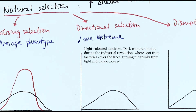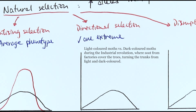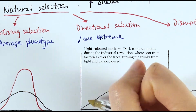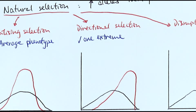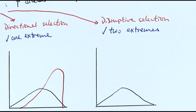Directional selection is when one particular extreme phenotype is selected. An example is the color of moths — there are light-colored and dark-colored moths. In the past there were more light-colored moths because they were camouflaged on light-colored tree surfaces, while darker moths stood out and were eaten by birds. However, because of the industrial revolution, soot covered tree branches making them darker, giving dark moths a survival advantage. There was then a massive shift in the population toward dark-colored moths.